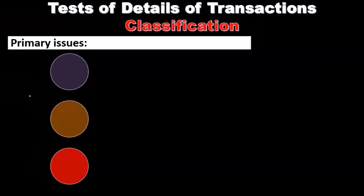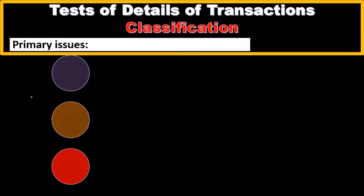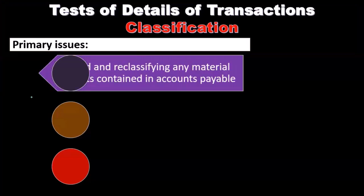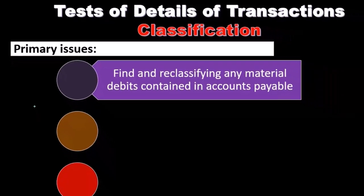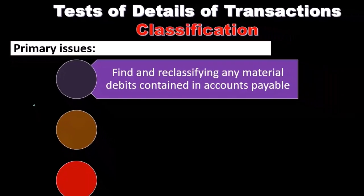Next, we'll take a look at the assertion of classification. The primary issues with regards to classification in the test of details of transactions are to find and reclassify any material debits contained in accounts payable. We're going to go through the detail of accounts payable — if there are debit balances, something unusual may have happened, and we'd want to remove any debit balances in accounts payable.